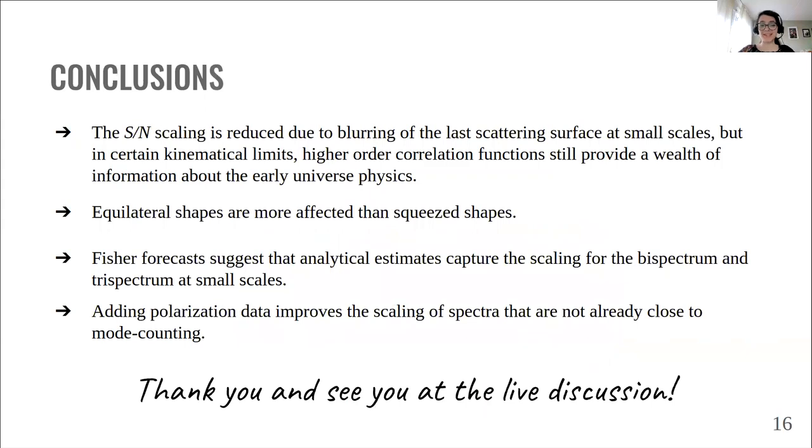In conclusion, the scaling of the signal to noise with resolution is reduced due to a blurring effect at small scales, given by the finite thickness of the last scattering surface. However, in certain kinematical limits that we explored, higher-order correlation functions still provide a wealth of information about the early universe physics and are worth exploring. We also showed that equilateral shapes are more affected than squeezed ones, and we tested our theoretical analysis with the Fisher forecast, confirming our findings. Here, we show that combining polarization and temperature data can improve the scaling of those spectra that are not already optimal. Thank you for watching this talk, I hope you enjoyed it, and see you soon at the live discussion, with many questions, I hope. Bye!